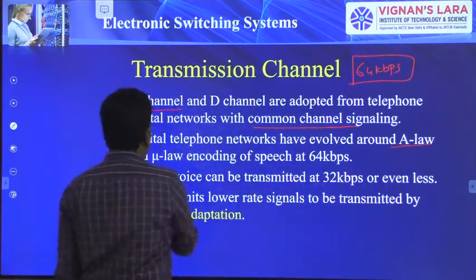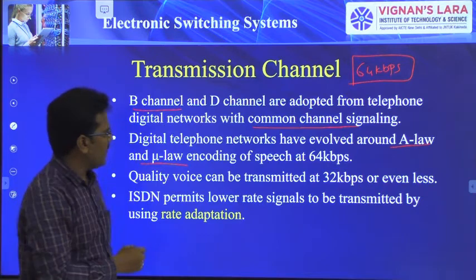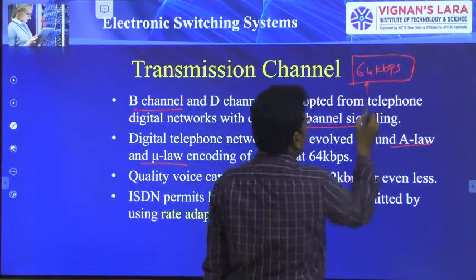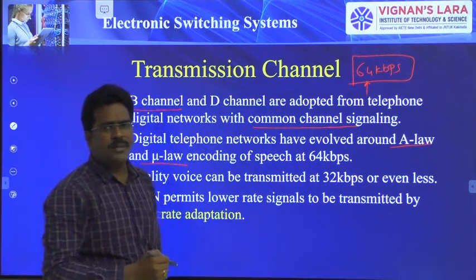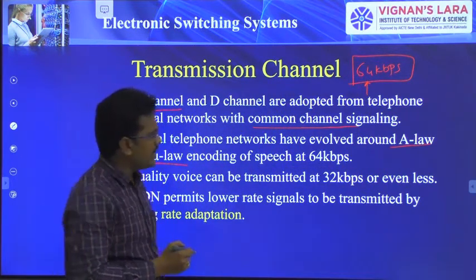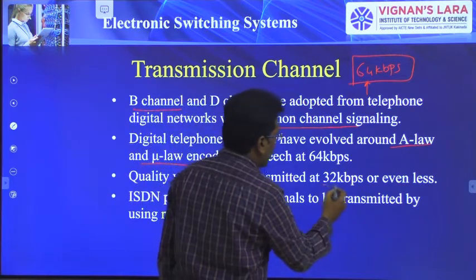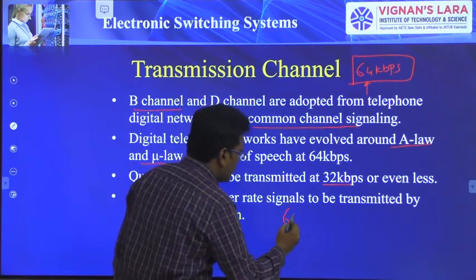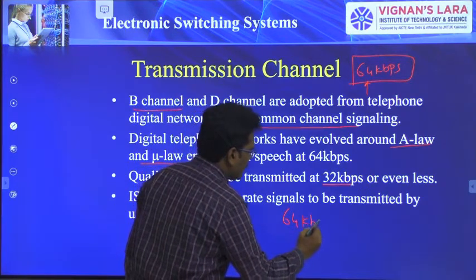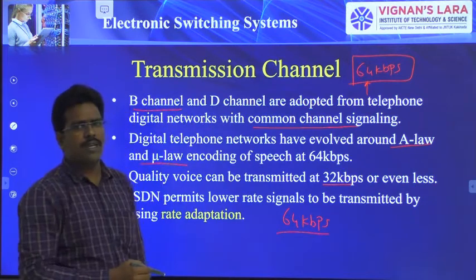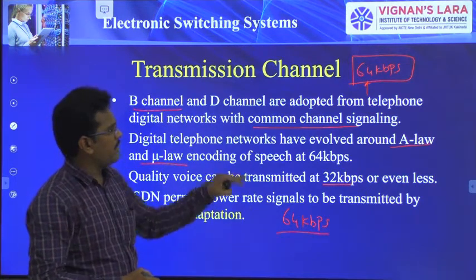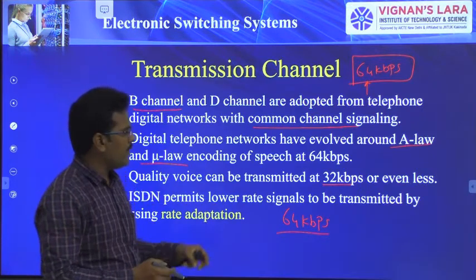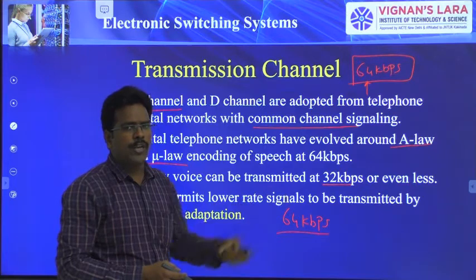These channels are evolved from A-law and mu-law encodings of speech. The voice quality — you can transmit good quality voice with 32 kbps or even lesser kbps. There is no need to have the entire 64 kbps for transmitting quality speech. It is possible to transmit high quality voice at lower bit rates such as 8, 16, or 32 kbps.